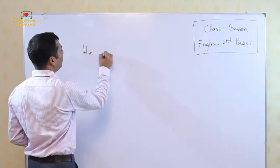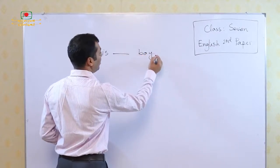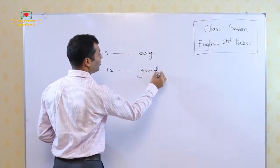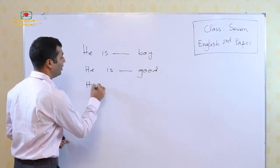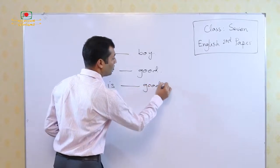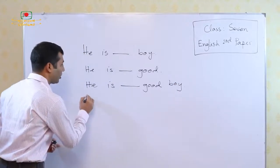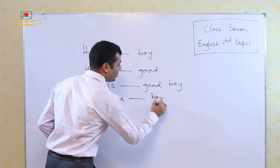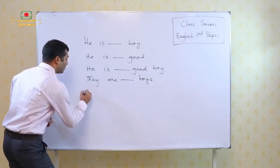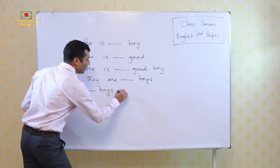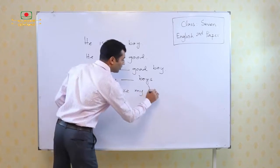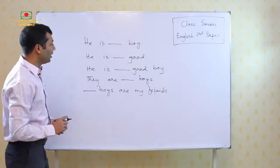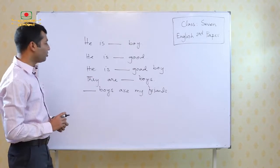He is dash boy. Next sentence, he is good. The next sentence, he is dash good boy. Come to the next sentence, they are boys. Then the next sentence, dash boys are my friends. Look at these five sentences: he is dash boy, he is dash good, he is dash good boy, they are dash boys, and dash boys are my friends.